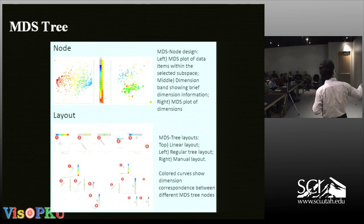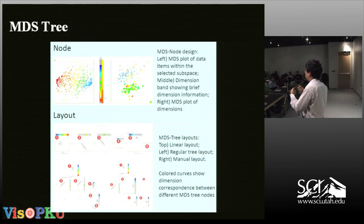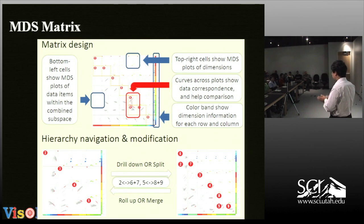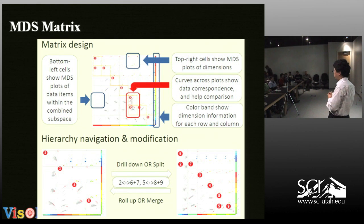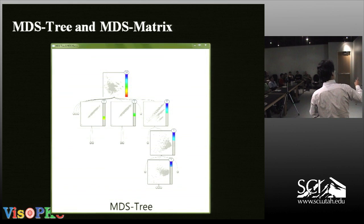Consider we have a high-dimensional space — any high-dimensional space — and we have some metrics. We can build a dimension hierarchy, which could be user-specified based on understanding of the data. Based on this hierarchy, we can build a tree where each node corresponds to the hierarchy. For each node, we embed an MDS plot, and we can expand it. The layout could be a tree or other form. We also visualize the relationship between all those dimensions — whether they are close or different — and we can also map that tree into a matrix, like a treemap.